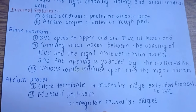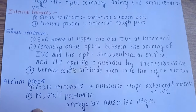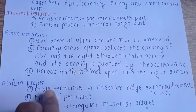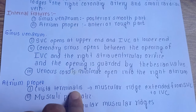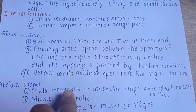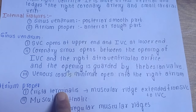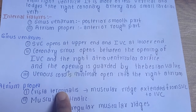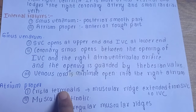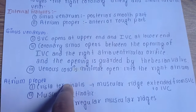The atrium proper consists of the crista terminalis, which we have also discussed before. It is a muscular ridge extending from the superior vena cava to the inferior vena cava, and it gives rise to the sulcus terminalis externally.